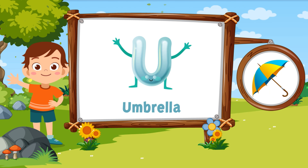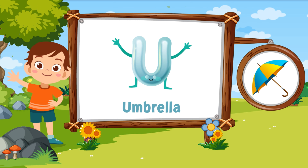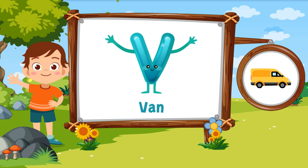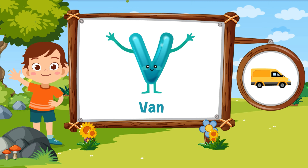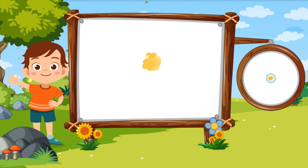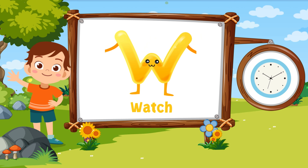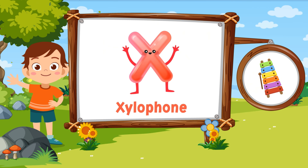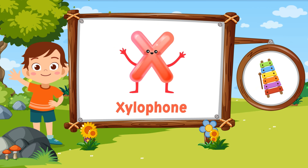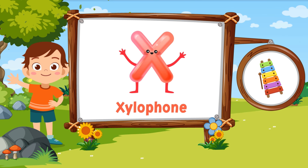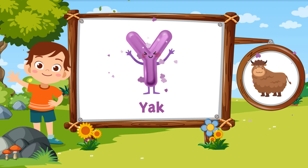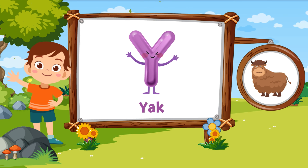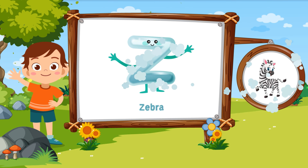U for umbrella. V for van. W for watch. X for xylophone. Y for yak. Z.